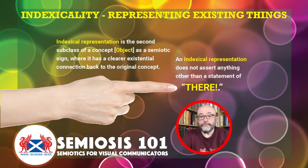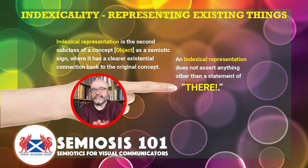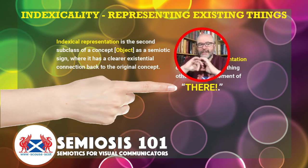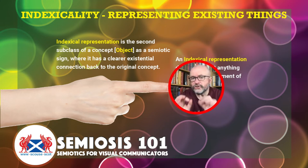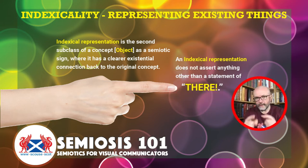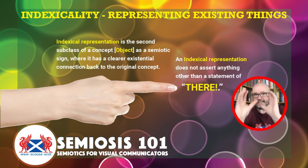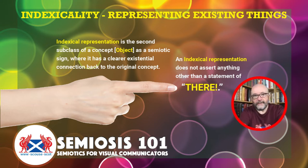Indexical representation is the second subclass of representing a concept as a semiotic sign, where it has a clear existential connection back to the original concept. Indexical representation does not assert anything other than a statement of 'there' — the index finger pointing — 'there, it exists.' It's something that the target audience knows is actually existing somewhere in their experience.